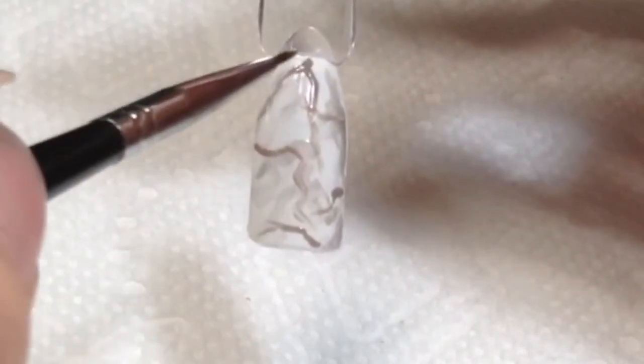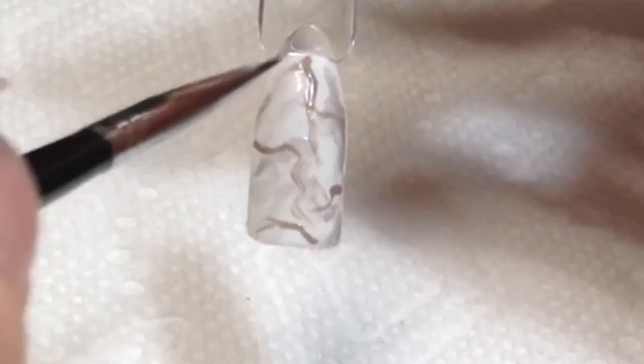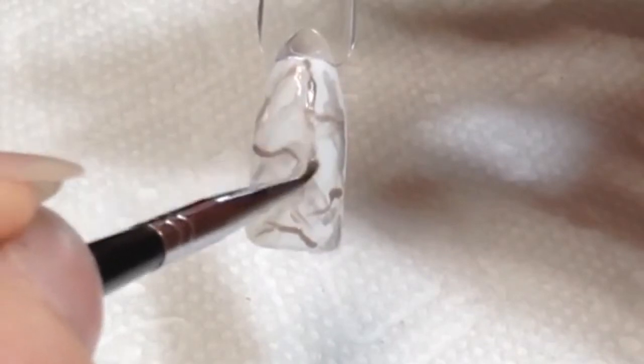Once again, you're going to wipe your brush off and dip it in the polish remover and thin out those lines, get them to spread out good.